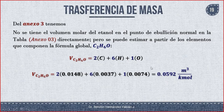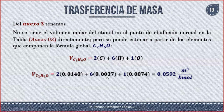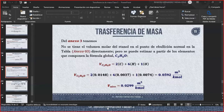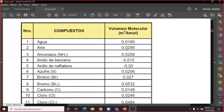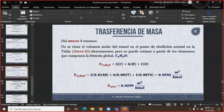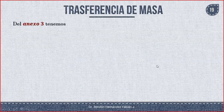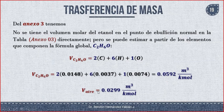Ya tenemos el volumen del etanol: 0.0592 m³/kmol. El otro ya se sacaba directamente de la tabla. Como era aire, el valor es 0.0299 m³/kmol. Nos quedamos con esos valores y vamos a resolver el modelo de Gilliland.